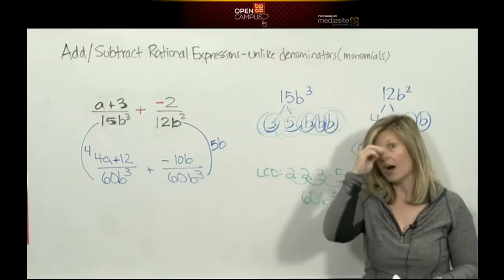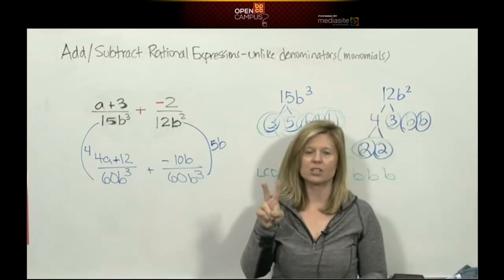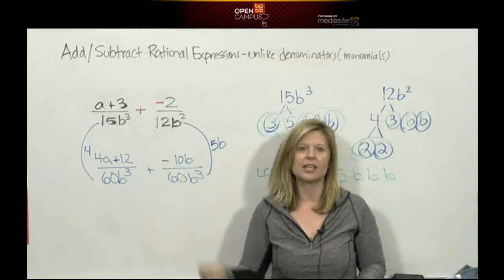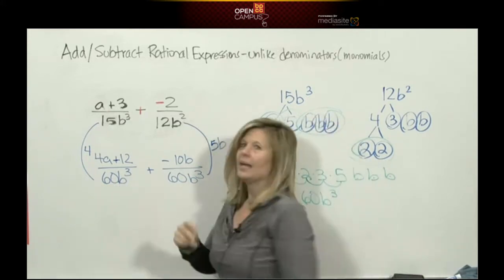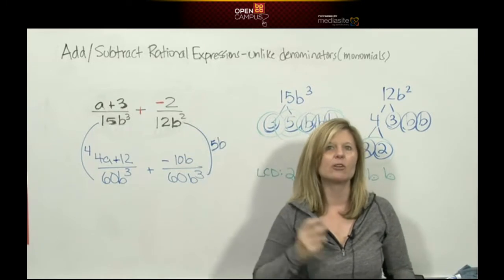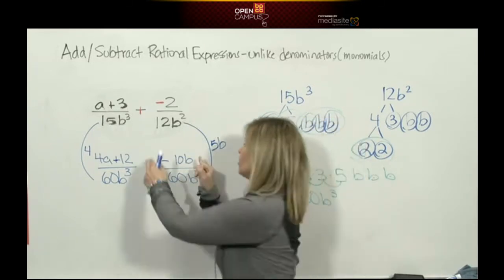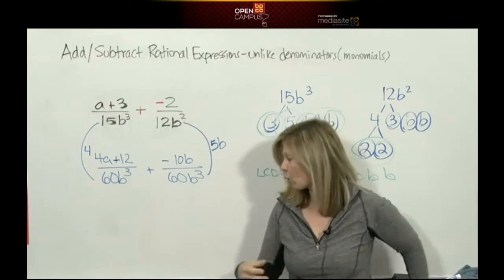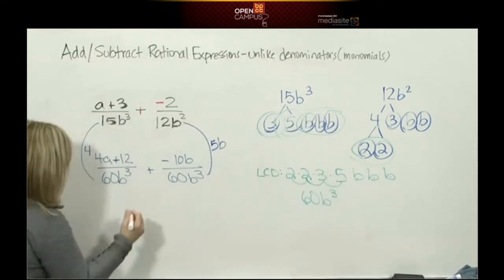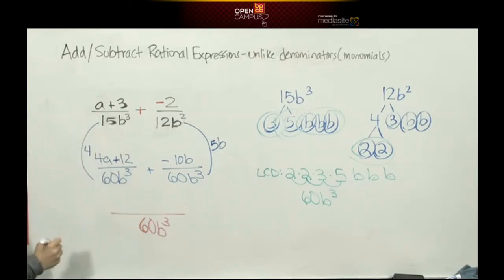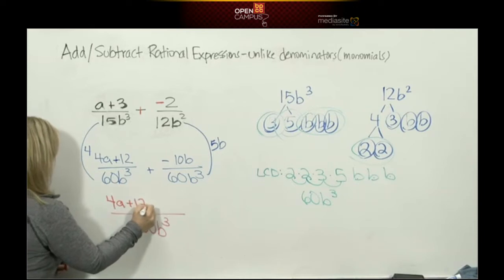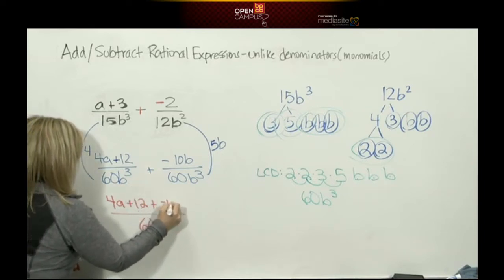So we've done the first two phrases of the song. Adding fractions easy as can be, all you need is an LCD. If you change the denominators, you must change the numerators. So the rest of the song says write the bottom. The bottom is 60b cubed. Collect the top. So we're going to write our numerator: 4a plus 12 plus negative 10b.